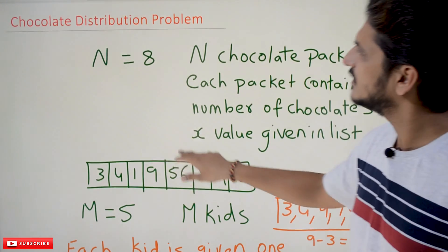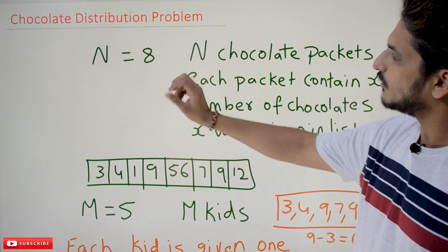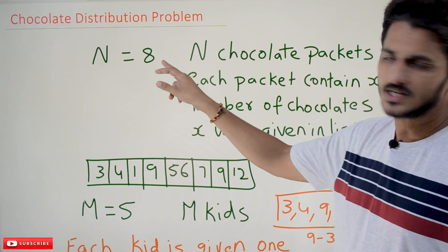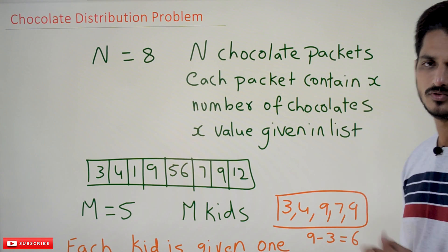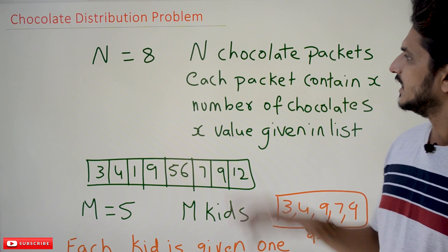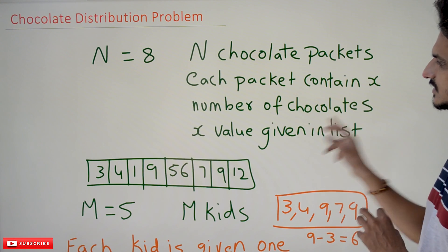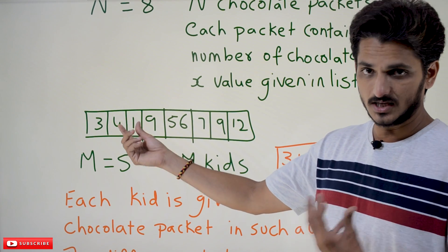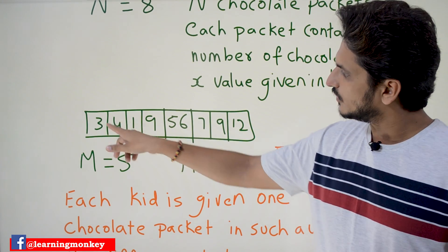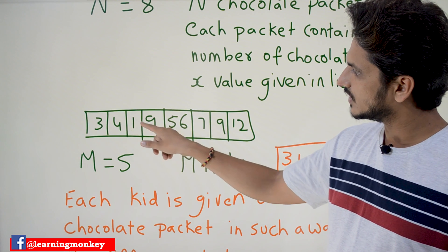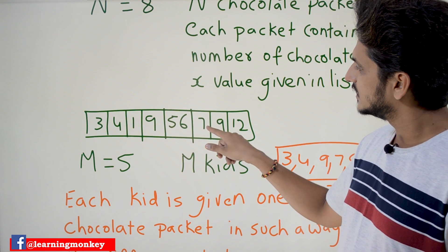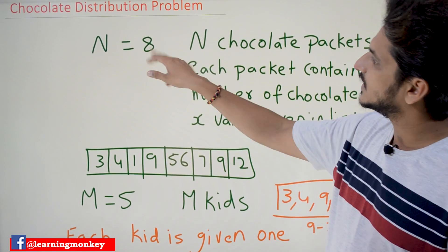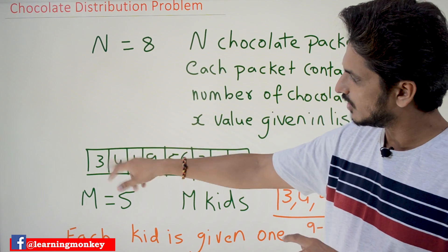Coming to today's example, first we will understand the question. They are going to provide the input value n. Assume that if n is equal to 8, it means that n chocolate packets are there. Each packet contains x number of chocolates, and the x values are given in a list. So the first chocolate packet contains 3 chocolates, 4, 1, 9, 56, 7, 9, and 12 chocolates — total 8 packets.